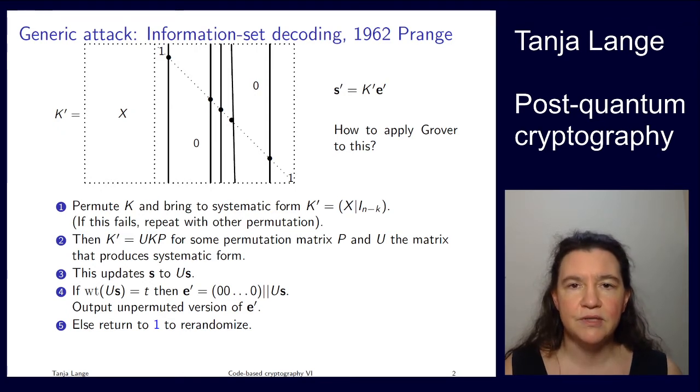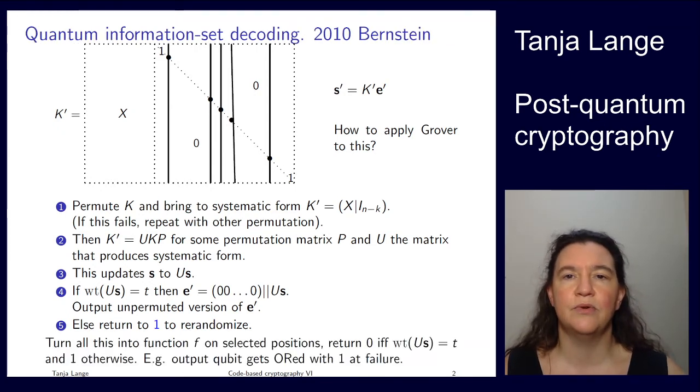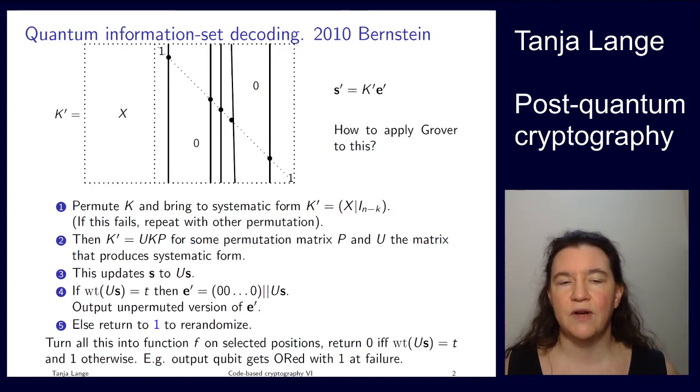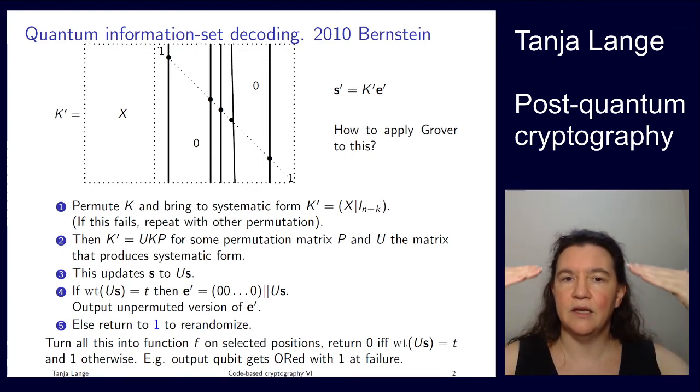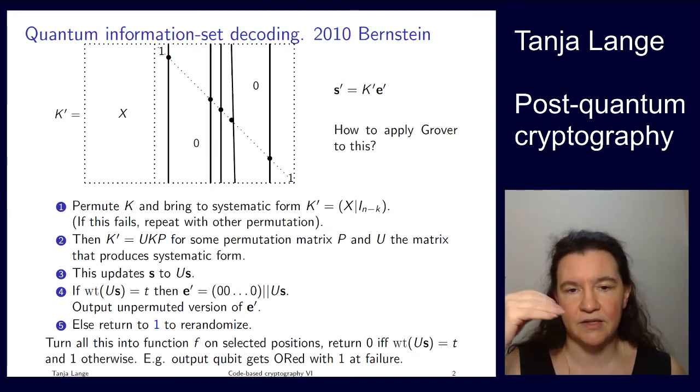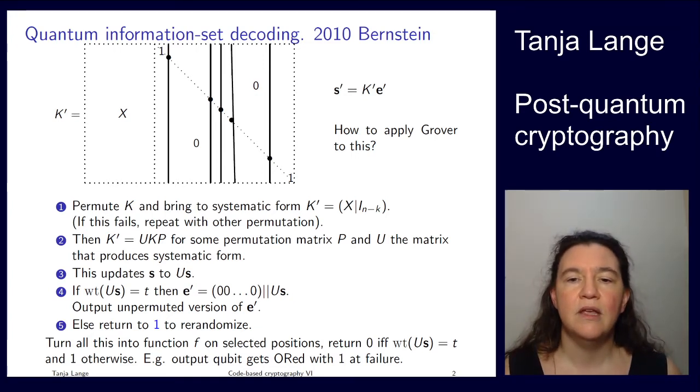And now applying Grover to this, it is done by Dan Bernstein in 2010, where he says you can turn all of this into one long function. So this function is a function on the selected positions. And the answer of this function, the value, is either zero or one, where it is zero exactly if everything succeeds. So it will be zero if and only if this updated version of s has weight t. And everything else gives you a one.